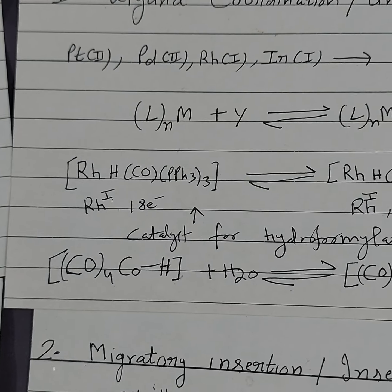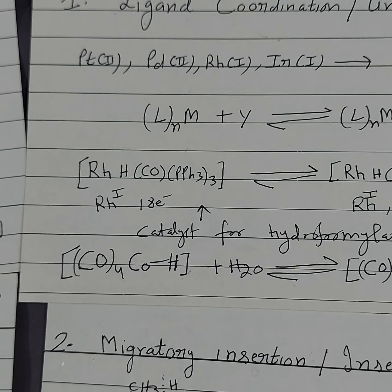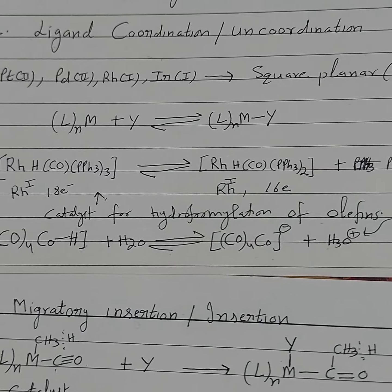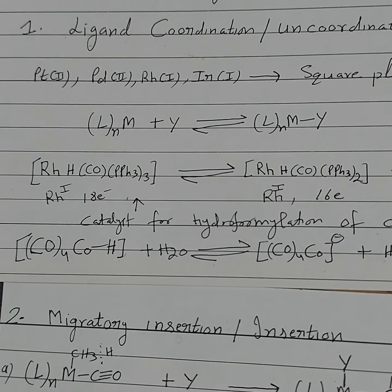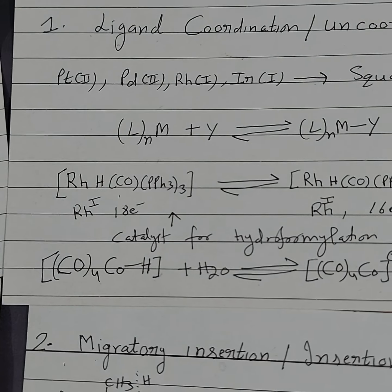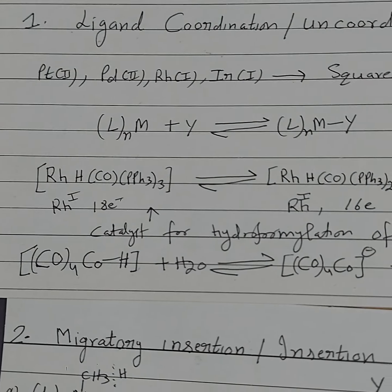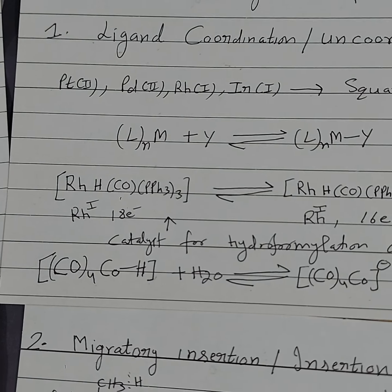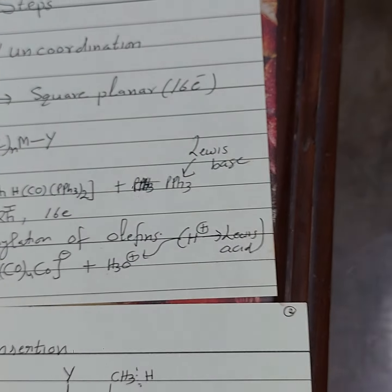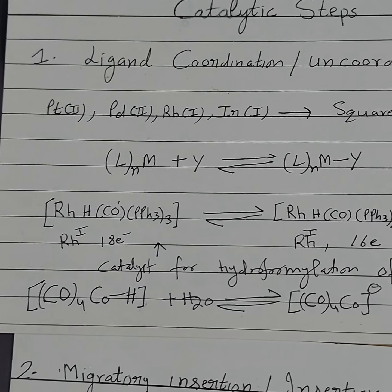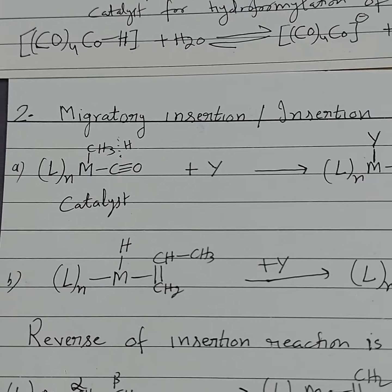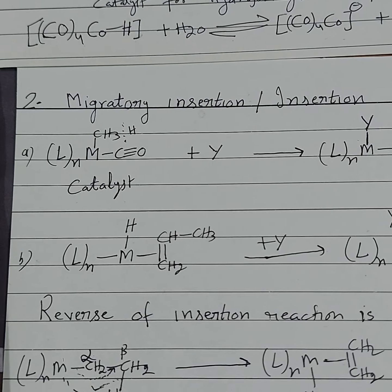But in many hydride carbonyl complexes which act as catalysts, during ligand uncoordination, the uncoordinated ligand acts as a Lewis acid — for example, in a hydride carbonyl complex. When it undergoes ligand uncoordination, the uncoordinated ligand acts as a Lewis acid due to back-bonding of the carbonyl with the metal. In this case, H uncoordinated acts as a Lewis acid. This ligand coordination and uncoordination is the first most common catalytic step. The second step is migratory insertion or insertion reaction.